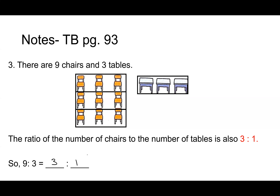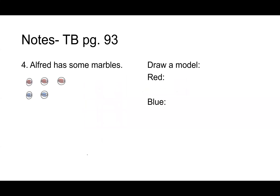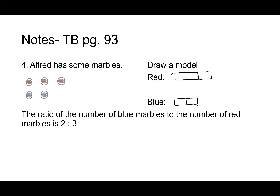The last page on your notes is Alfred and some marbles. We're going to draw some bar models first. How many red marbles does Alfred have? Three. Let's draw a bar model to represent the units of red marbles. How many blue marbles does Alfred have? Two — so I'll draw two units for his blue marbles. The ratio of the number of blue marbles to the number of red marbles is two to three.